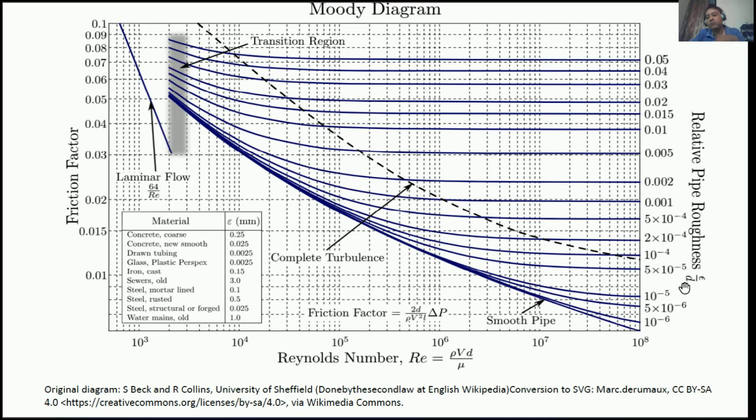What this exactly is, we will learn by the help of a numerical example. Right now just keep in mind that the right-hand side y-axis is called relative pipe roughness. And you can see these blue lines going straight toward left and then taking a curve. These are constant relative pipe roughness lines. Constant means if the relative pipe roughness over here is 0.04, then through this entire blue line it will remain 0.04. Similarly, this is 0.005 - through this entire blue line it remains 0.005.